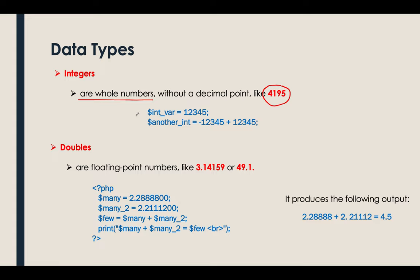Based on my example here, I have two variables: int_var, which is the first variable because of the dollar sign, and another_int, which is another variable because of the dollar sign again. Each variable has its own value.